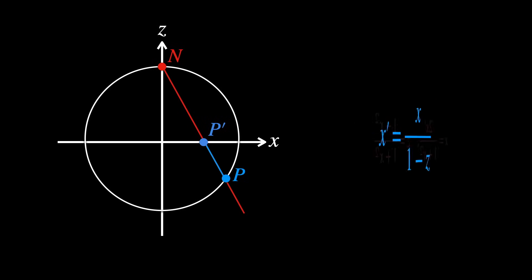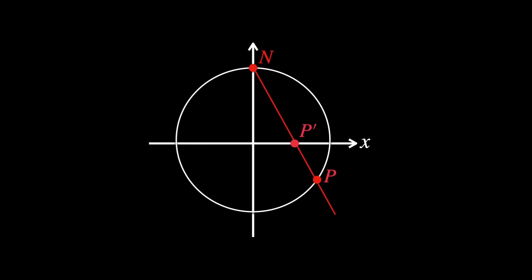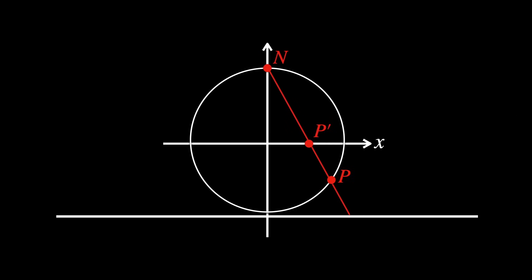From a point P' with coordinates (x', 0), we can reverse the projection to find the corresponding point P with coordinates (x, z) on the circle. These are the inverse formulas. The stereographic projection shows that every point on the circle, except for the north pole, can be mapped to a unique point on the line, and vice versa.